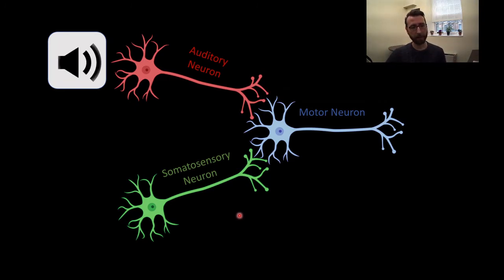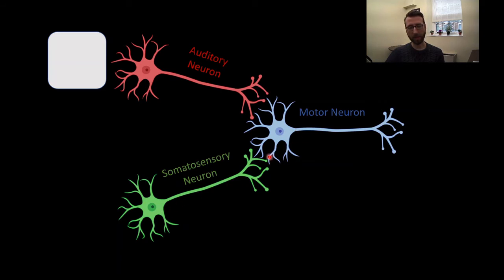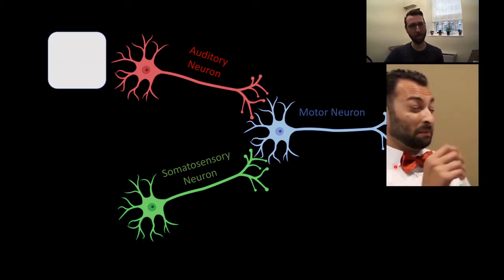During conditioning, first an auditory stimulus arrives, causing our auditory neuron to have an action potential propagate down to the terminal buttons where it releases its neurotransmitter. Shortly after, an air puff arrives and an action potential makes its way down, creating depolarization in the motor neuron. The arrival of that somatosensory neuron information is strong enough to create an action potential in the motor neuron, causing the muscles around your eye to contract and produce a blink. The auditory neuron alone wasn't enough — that blast of auditory information is not going to cause you to blink or sufficiently depolarize the motor neuron.